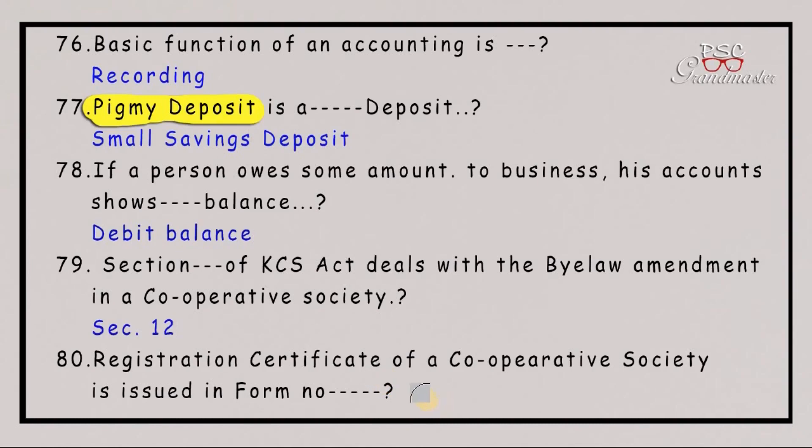The registration certificate of a cooperative society is issued in Form No. 3.